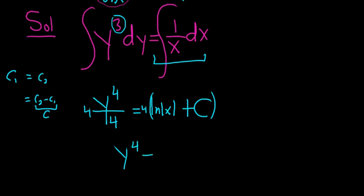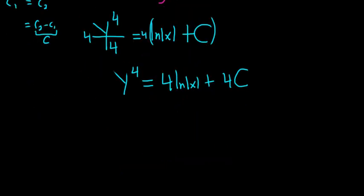This is a lot easier than I thought it would be. I had not done this problem. This is 4 natural log absolute value of x plus 4c. This is instructive. So c is arbitrary, it could be any number. We're multiplying it by 4, so we can rename our constant.